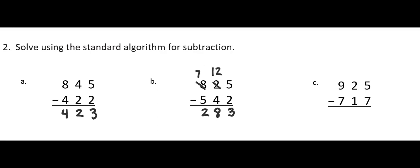In question C, I have 925 minus 717. In my ones place I have 5 and need to subtract 7, so I'll take one of my tens and decompose it into ten ones. That leaves one ten. Combined with the five already there, I have 15 ones. 15 minus 7 equals 8. In my tens column, 1 minus 1 is 0. In my hundreds column, 9 minus 7 is 2, for a final answer of 208. That's an example of using the standard algorithm without the place value chart.